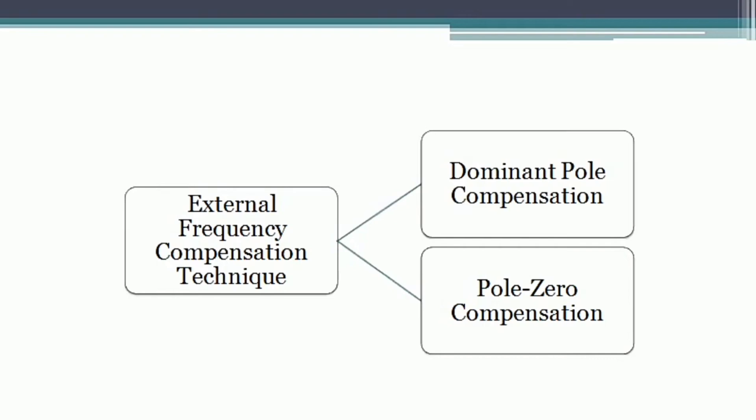As we know, in the dominant pole compensation the major problem is that the bandwidth will be less, but for different applications we require a larger bandwidth. In order to overcome this drawback and provide a larger bandwidth, we prefer the second method, which is pole-zero compensation. Pole-zero compensation means that for the open loop op-amp circuit, externally we are adding one pole and one zero to that circuit. We will see mathematically how it provides stability.